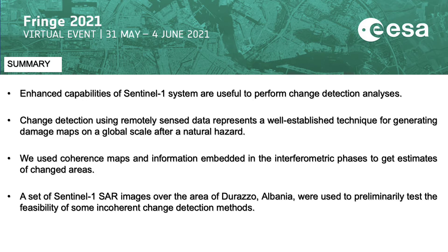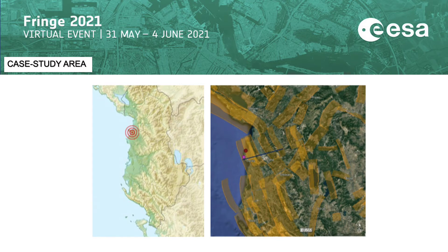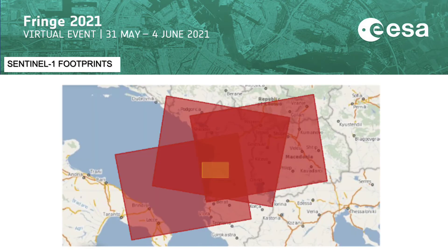We have used a set of 12 SAR images acquired by the Sentinel-1 SAR system related to the area of Durazo, which was hit by an earthquake at the end of 2019. This is the area hit by the earthquake, and in particular the epicenter area.